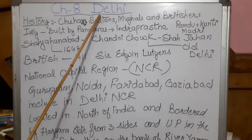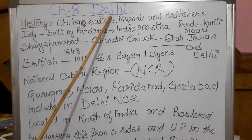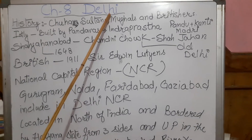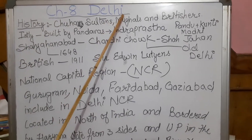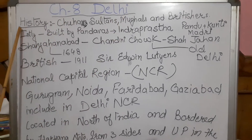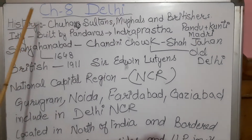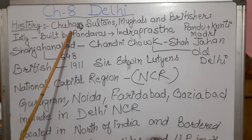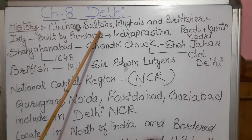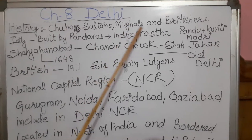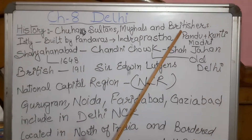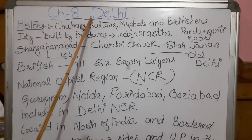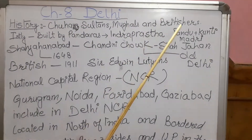Students, as you know, Delhi is the capital city of India. So before starting this chapter, I want to clear the history of Delhi. Delhi was ruled by the Chauhans, Sultans, Mughals, and the Britishers. All these came to Delhi and ruled over here one by one.